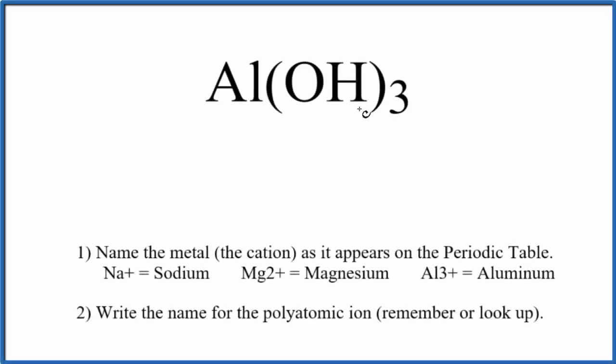To write the name for Al(OH)₃, the first thing we need to realize is this OH right here is a polyatomic ion. This is called the hydroxide ion, and we actually have three of them.